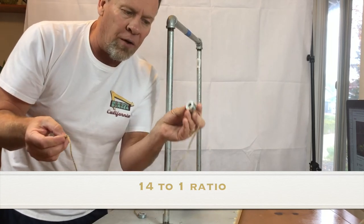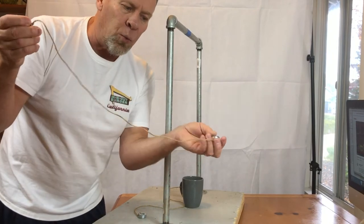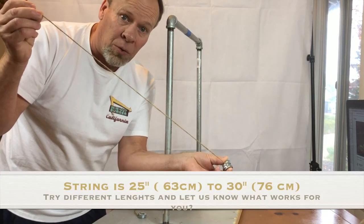So you're going to want 14 washers here and one washer here and then about a 25 to 30 inch piece of string.